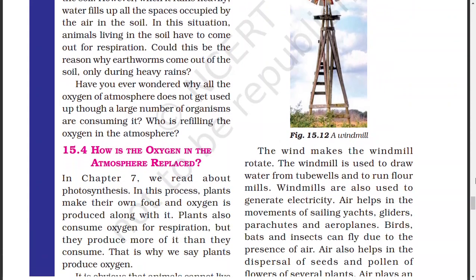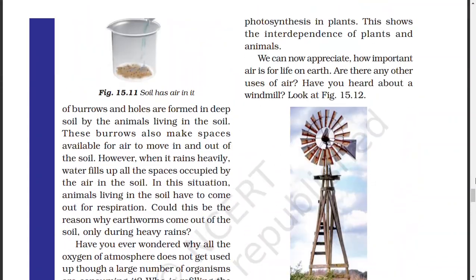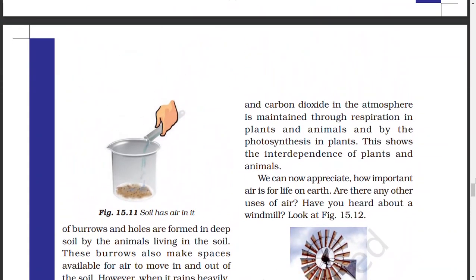Next, how is oxygen maintained in the atmosphere? Through photosynthesis, plants produce food and also produce oxygen. When animals consume oxygen, plants replenish it in the atmosphere. This shows the interdependence of plants and animals.